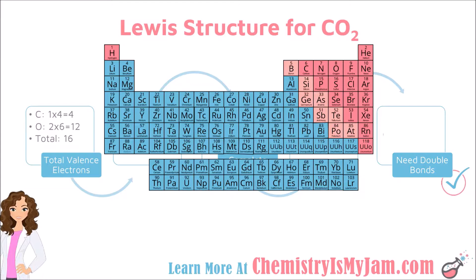Let's look at another example that uses some different aspects to the rules. We are going to start by totaling the valence electrons for carbon dioxide, which has 1 carbon and 2 oxygens. I have 1 carbon; carbon has 4 valence electrons, so 1 times 4 is 4. There are 2 oxygens; oxygen has 6 valence electrons, so 2 times 6 is 12. Add them together, we should have a total of 16 valence electrons.